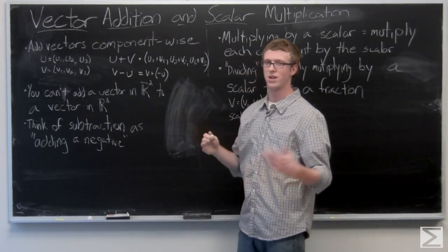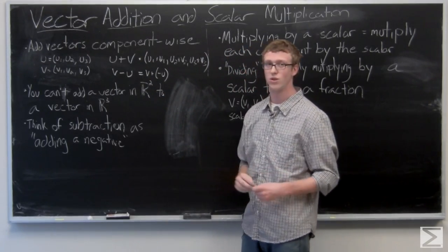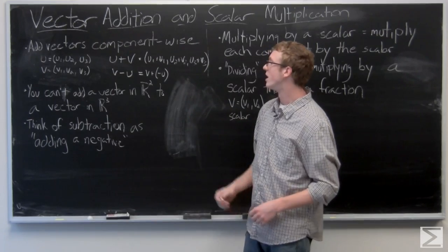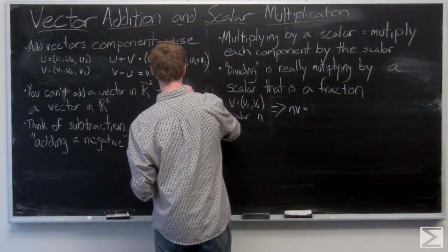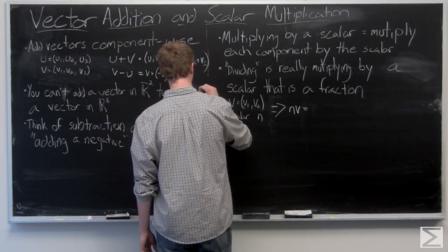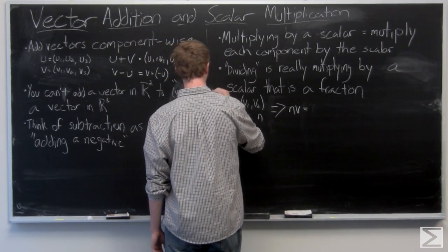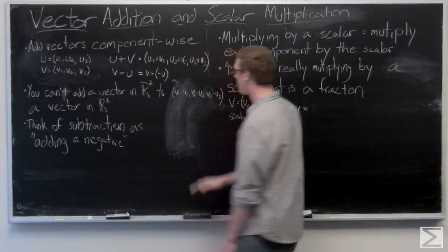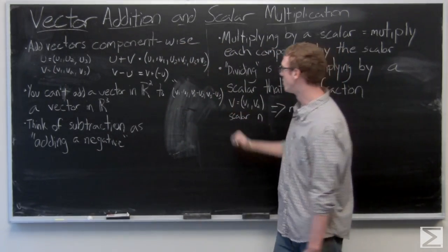And then negative u is just going to be negative u1, negative u2, and negative u3. So it would just be... And this is our resulting vector when you do v minus u.